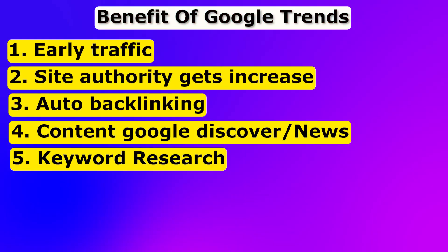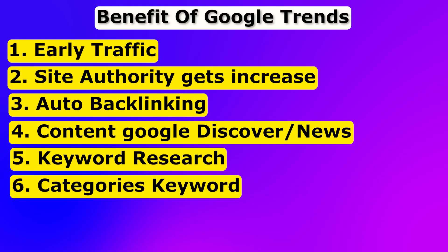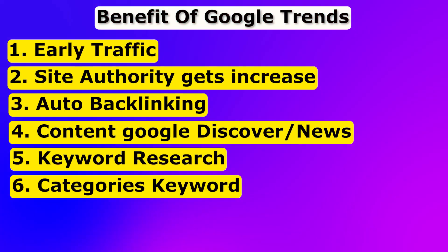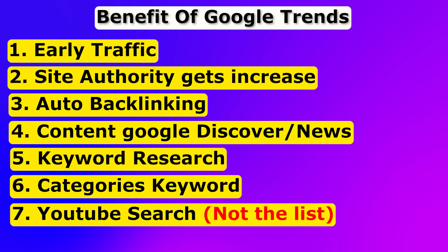Benefit four — your content might go to Google Discover and Google News, which is a bonus source of traffic without any link-building exercise. Benefit five — you can do keyword research by geography, by state, by city, making it ideal for local SEO. Benefit six — you can categorize your keywords by niche, such as entertainment or blogging. And finally, you can use the search intent with different search types — YouTube search, Google News search, web search, and Google Shopping — so e-commerce businesses can also benefit from this tool.